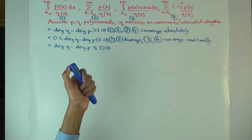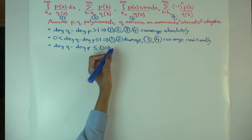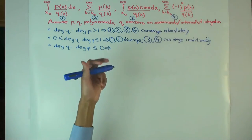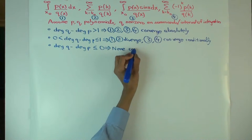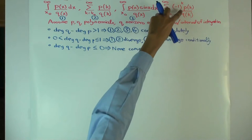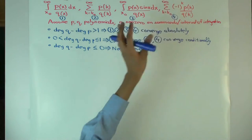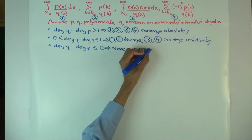What happens if the degree difference is less than or equal to 0? None of them converges. If pk and qk are both 1, this is just the summation of (-1)^k — which is minus 1, plus 1, minus 1, plus 1 — that summation just oscillates between minus 1 and 0, so it won't converge. Some people use 'diverge' whenever something doesn't converge, but I'll just say none of them converges.